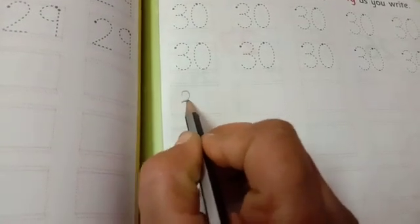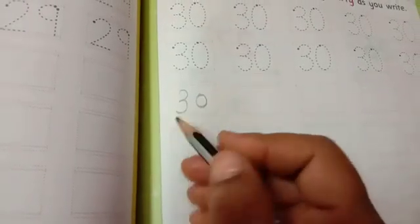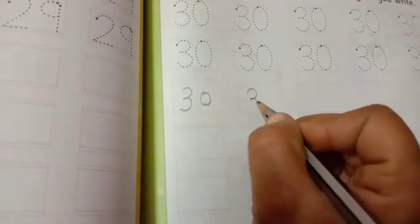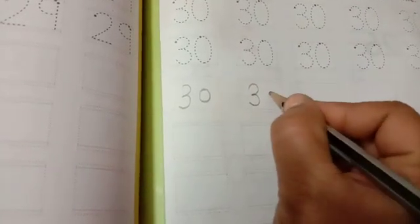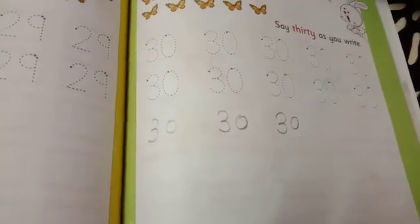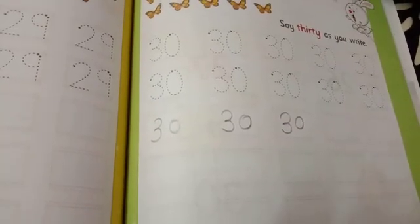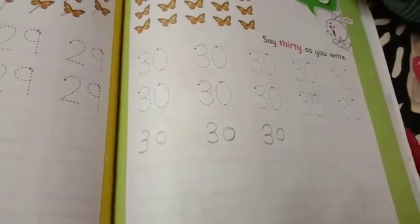In which way can you write 30? First students, we can write number 3 and then 0 makes number 30. First we write 3, then 0 makes 30. This is number 30. Before 29, then after 29, 30 comes.